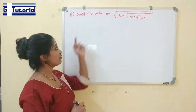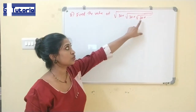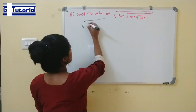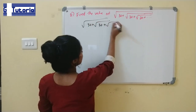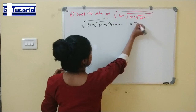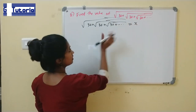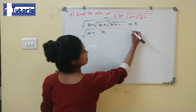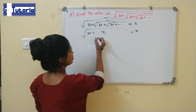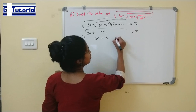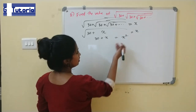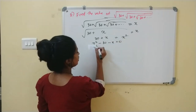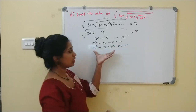Next question: find the value of √(30 + √(30 + √(30 + ...))). Let this entire expression equal X. Then √(30 + X) = X. Squaring both sides: 30 + X = X². Rearranging: X² - X - 30 = 0. So we have a quadratic equation to solve.